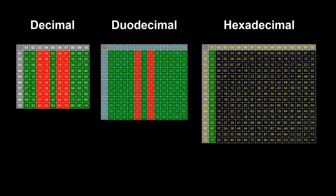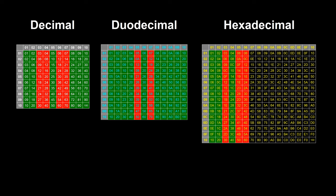In hexadecimal it is easy to remember the 1 times table because the last digit counts up in ones and the first digit counts up when the last digit changes from F to zero. The 2 times table has a repeating pattern of 2, 4, 6, 8, A, C, E, 0. There is no easy way to remember the 3 times table. The 4 times table has a repeating pattern of 4, 8, C, 0. There is no easy way to remember the 5, 6 or 7 times tables. The 8 times table has a repeating pattern of 8, 0.